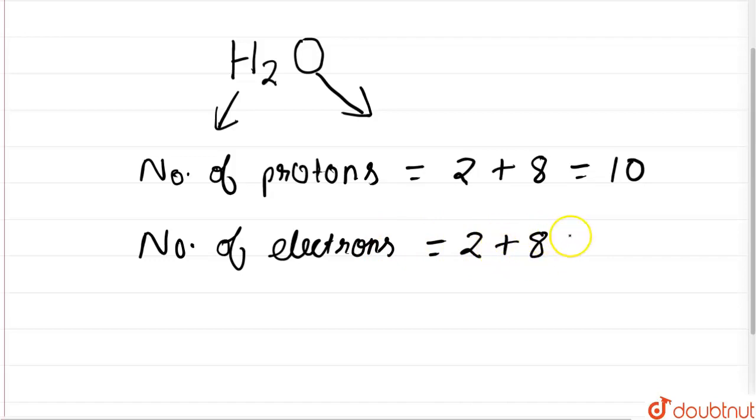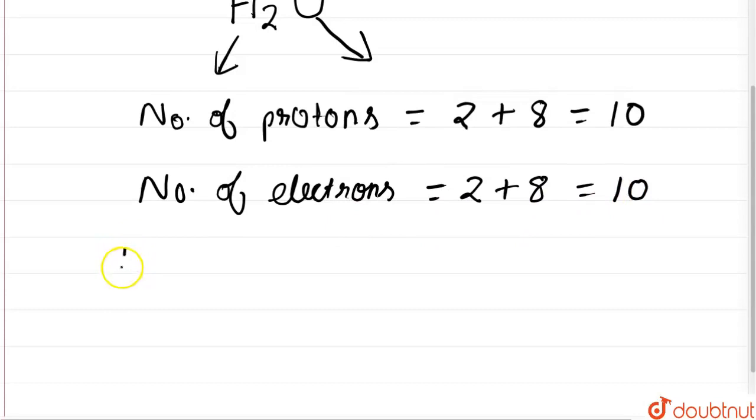So the number of electrons is also ten. Now, total positive charge is equal to ten multiplied by the charge on one proton, which is e.